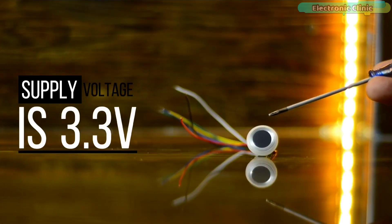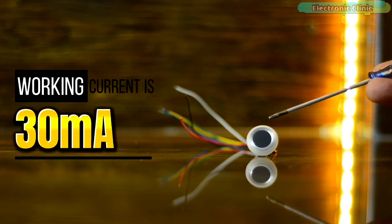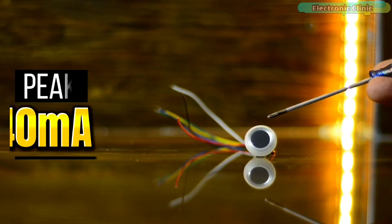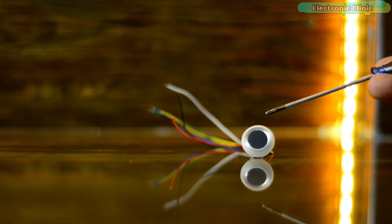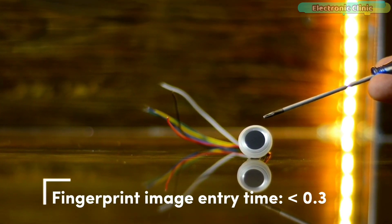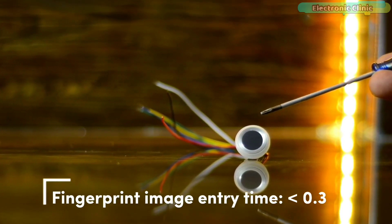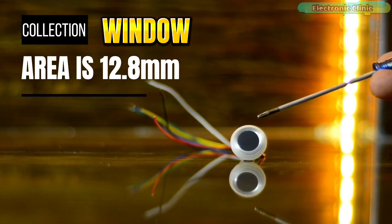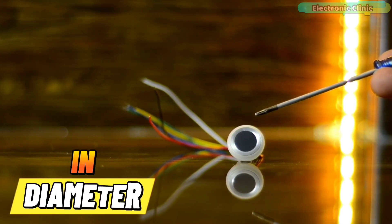Supply voltage is 3.3 volt, working current is 30 milliamps, peak current is 40 milliamps, fingerprint image entry time is less than 0.3 seconds, and collection window area is 12.8 millimeter in diameter.